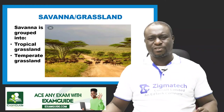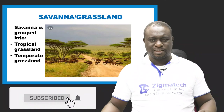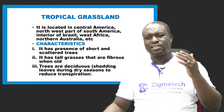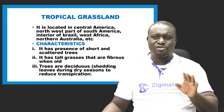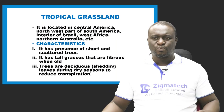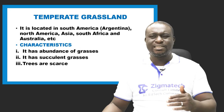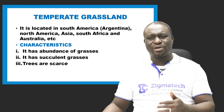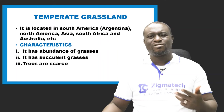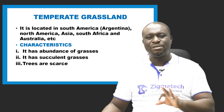There are two types of savannah: tropical grasslands and temperate grasslands. Tropical grasslands are located in Central America, northwest South America, the interior of Brazil, and West Africa. They consist of short and scattered trees and tall fibrous grasses. Temperate grasslands are located in South America (mainly Argentina), North America, Asia, and Australia. They are characterized by an abundance of succulent grasses and scarcity of trees.